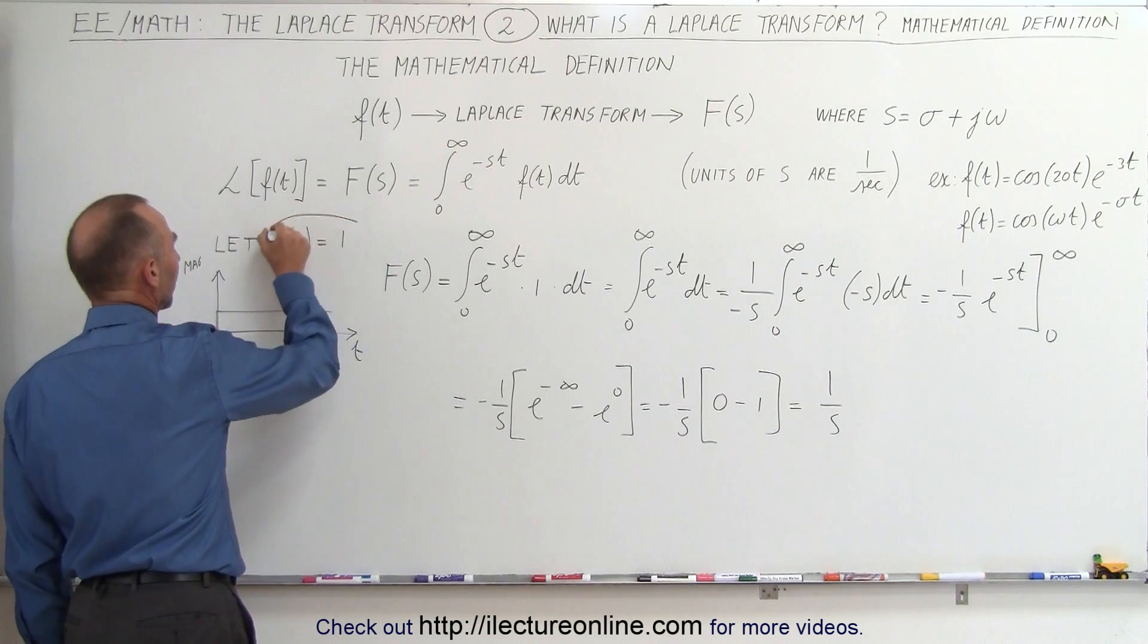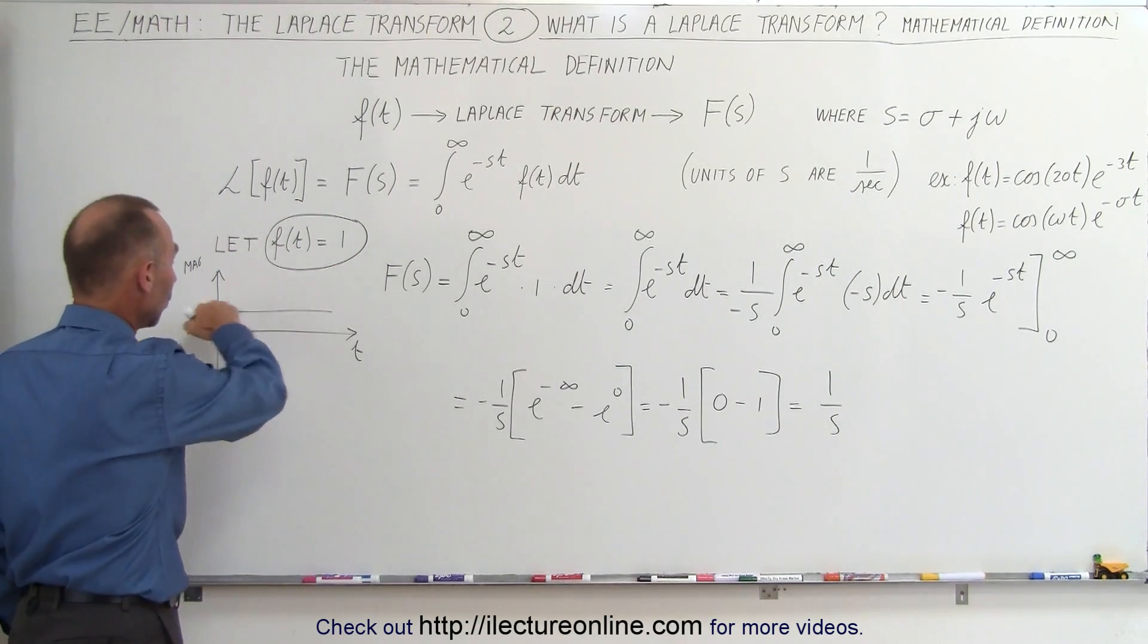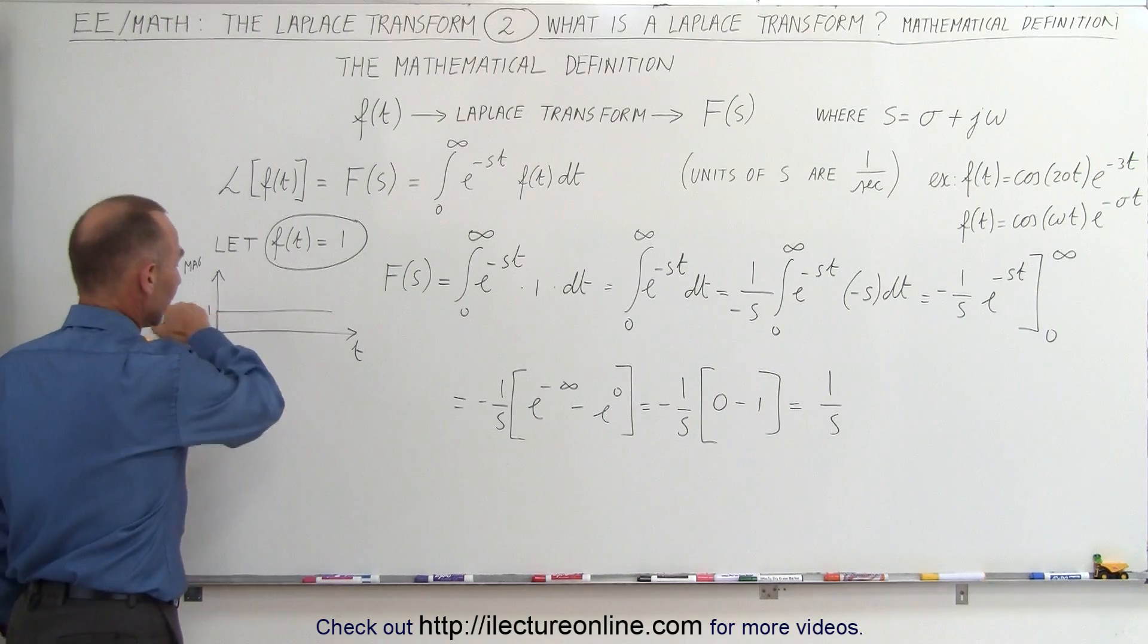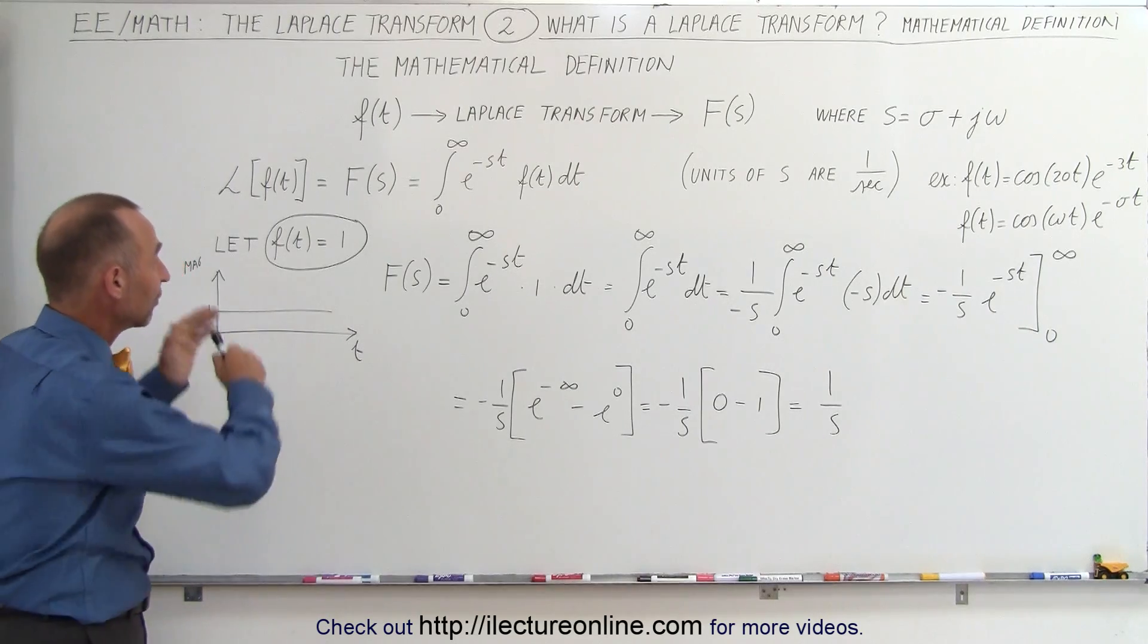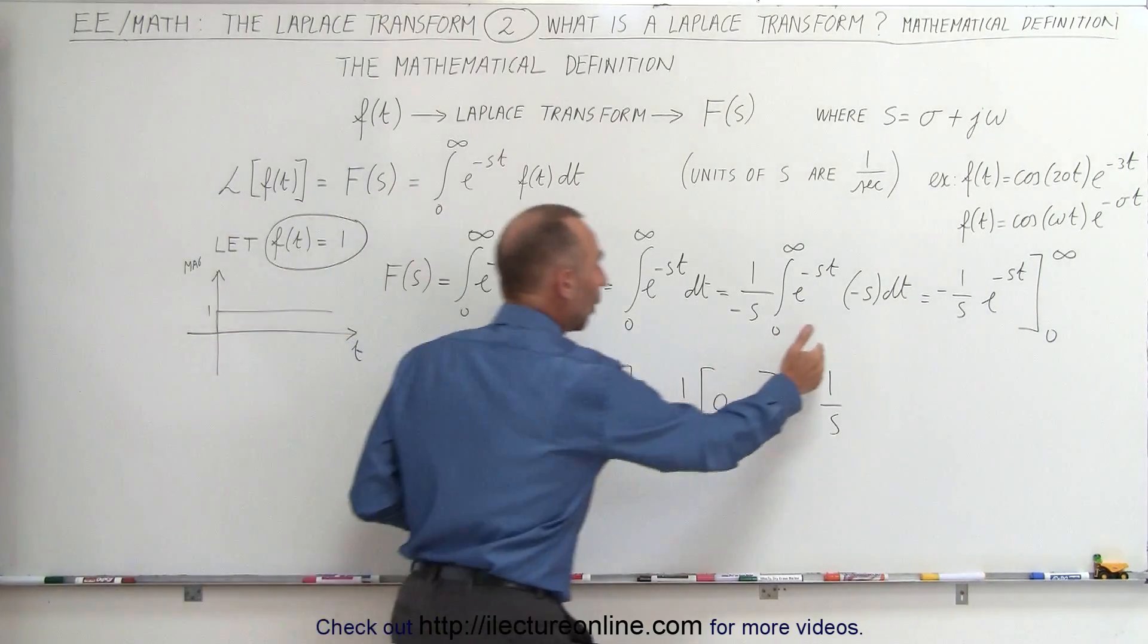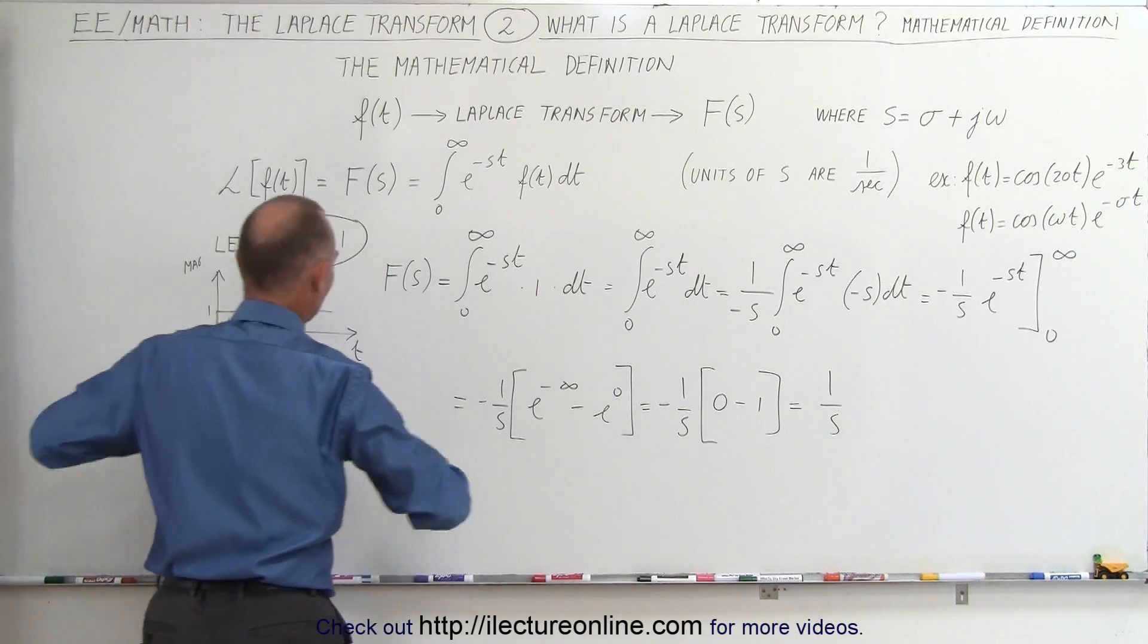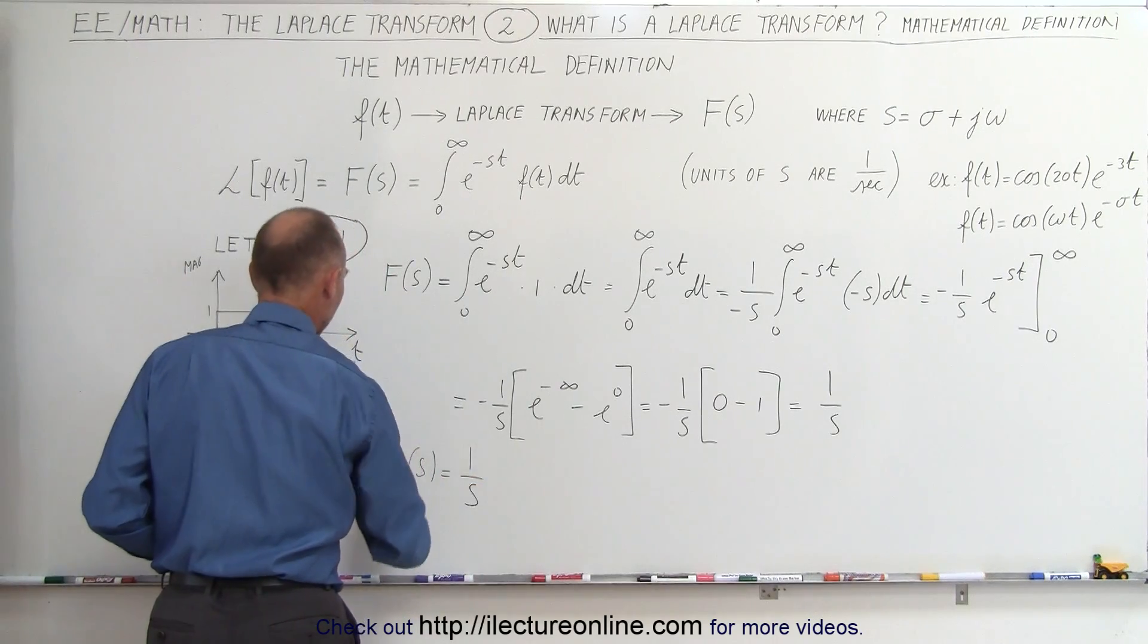So we can see that if we have a simple function where the function with respect to time is equal to 1, and I'll just put a 1 there for the entire duration from 0 to infinity, if we do a Laplace transform and convert that function to a frequency domain function, we get 1 over s. In other words, f of s is simply 1 over s.